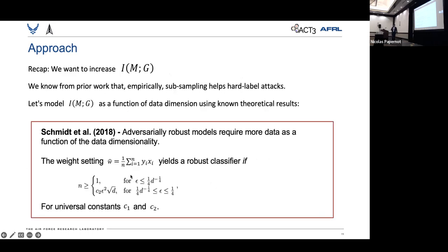Well, we know from prior work that empirically subsampling helps hard-label attacks achieve better query efficiency. So we'll model the mutual information between manifold and clean gradients as a function of the data dimension using known theoretical results from Schmidt and colleagues.